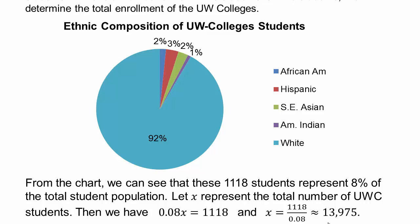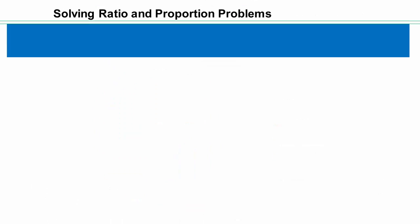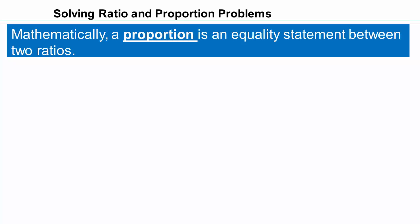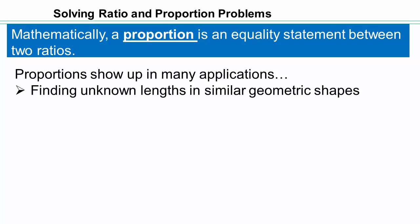So there is approximately 13,975 students in the University of Wisconsin colleges. Sometimes you'll see equations appear in solving proportions. A proportion is an equality statement between two ratios. When you take two ratios and equate them, it forms a proportion. Proportions show up many different places. For example, when you want to find unknown lengths in similar geometric shapes. Why is that? Because two objects in geometry are called similar if their corresponding sides are proportional.